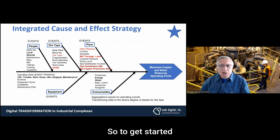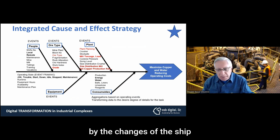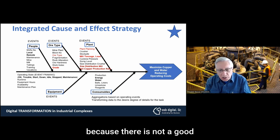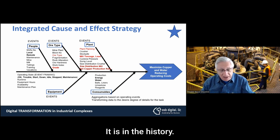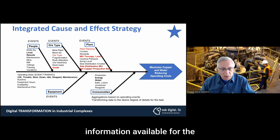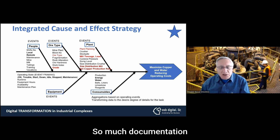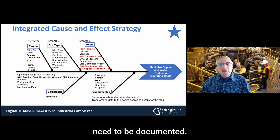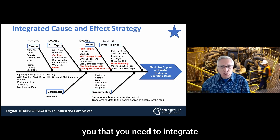To get started with what we call the continuous learning effect, you need to have this Ishikawa diagram — or fishbone — with all the key variables. People become a very important issue here because there are tremendous disturbances from shift changes, since there is not a good transition between one shift and the other. By having the digital twin, whatever happened is in the history. We need to have that information available for the new team coming on. They know what happened and everything is documented correctly — so much documentation goes verbal, but it needs to be documented. This Ishikawa diagram is really the model of the digital twin.